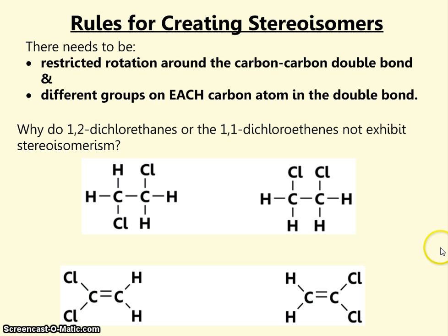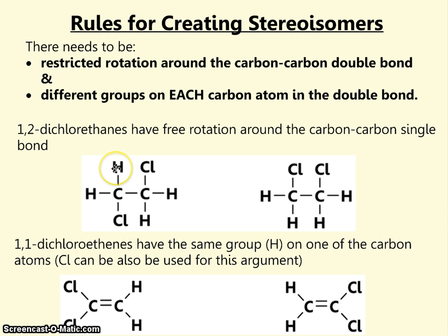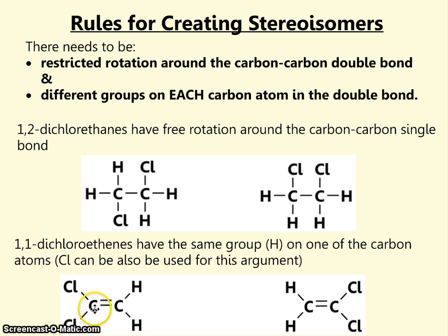Why do 1,2-dichloroethane and 1,1-dichloroethene not exhibit stereoisomerism? For 1,2-dichloroethane, there is free rotation around the carbon-carbon single bond, so you could twist the carbon around the bond so that the chlorine atom would end up in the same position. For 1,1-dichloroethene, stereoisomerism does not occur because one carbon has the same group on it — two chlorines — and the other carbon also has the same group — two hydrogens.